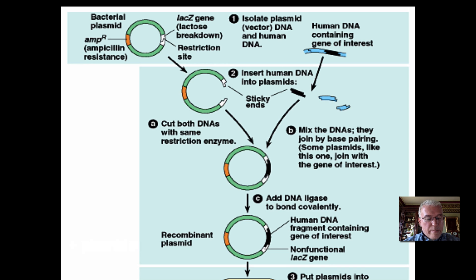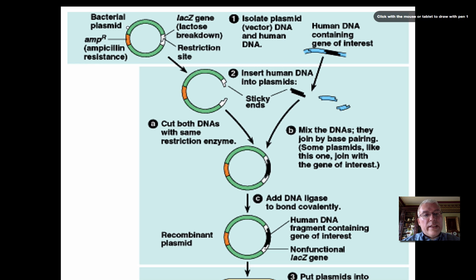Let's use this diagram to map our progress through this procedure. Up here in the upper left, we have our bacterial plasmid. Remember, plasmids are loops of DNA that contain genetic material separate from the main loop of material in the bacterial cell. This plasmid has been engineered so that it has the ampicillin resistance gene, colored in orange right here, and we also have the LAC-Z gene, colored in white right here.